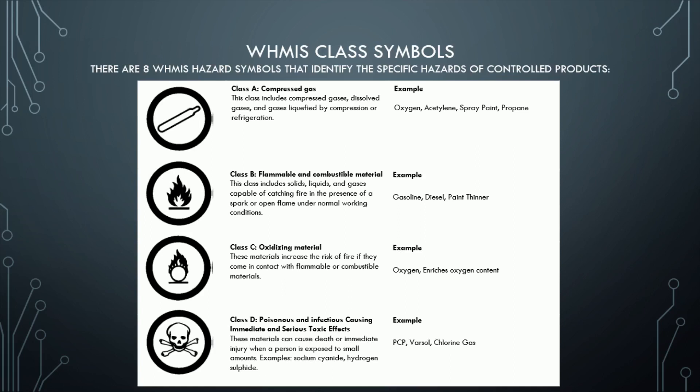Class D: Poisonous and Infectious — causing immediate and serious toxic effects. These materials can cause death or immediate injury when a person is exposed to small amounts. Examples: sodium cyanide, hydrogen sulfide, PCP, Varsol, chlorine gas.